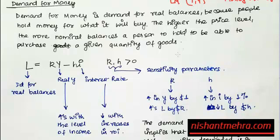Transactions demand for money is positively related to income: as income increases, demand for goods increases, transactions increase, and hence demand for money increases. Also, if the price level increases you need more nominal money balances in your pocket. Real balance is what you can buy from a given unit of money; nominal is the nominal money amount. We generally denote demand for real balances as L, equal to kY minus hi.